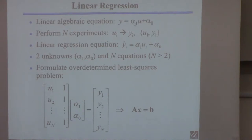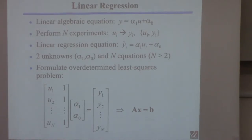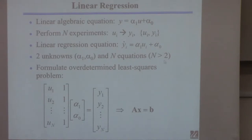If you want to perform linear regression and find the slope and intercept of this linear equation, you should do more than two experiments. Obviously, you could do just two experiments since two points define a line, but because experiments tend to have error, it's wise to do more. If you want to find these two parameters, you should do around ten experiments so that you minimize error in any particular experiment.